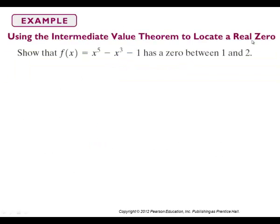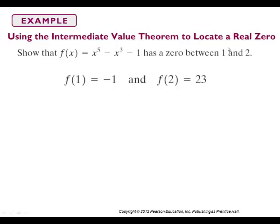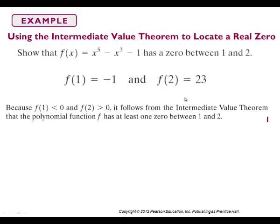Using the Intermediate Value Theorem to locate a real zero: it has a zero between 1 and 2. We plug 1 into our function and get y = −1, a negative value. We plug 2 in and get y = 23, a positive value. So somewhere between x = 1 and x = 2, the function had to cross the x-axis, meaning there's a zero in that interval.